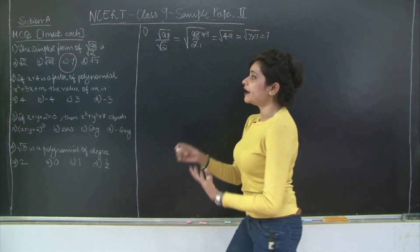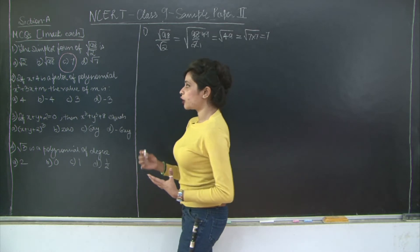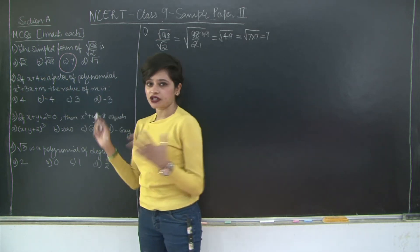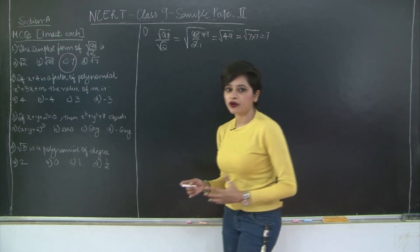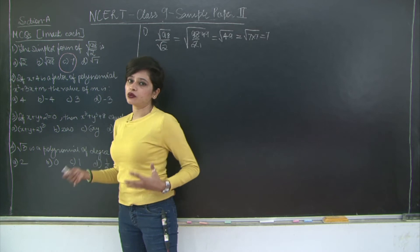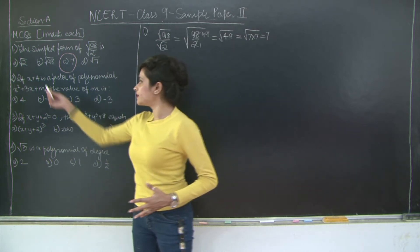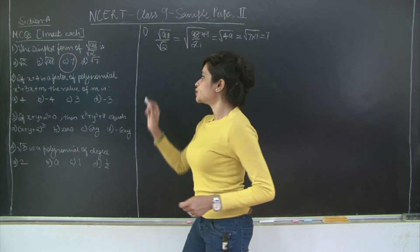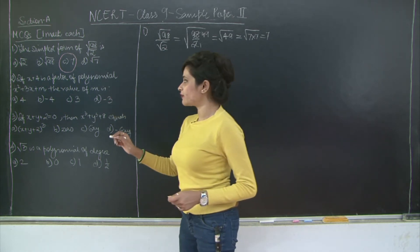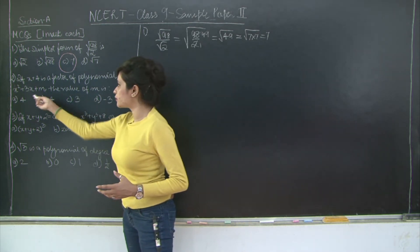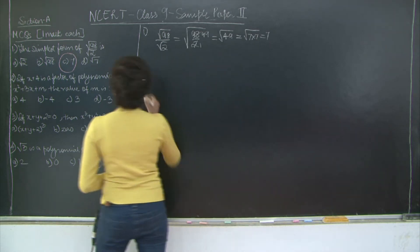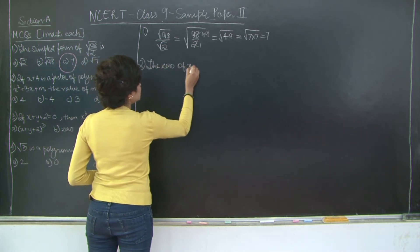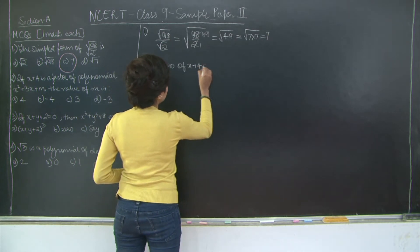When x+4 is a factor of a polynomial, the zero of x+4, when substituted into the expression, will give you the value of m. To find the zero of x+4, equate it to zero: x+4 = 0, therefore x = −4. So we substitute x = −4 into the expression to find m.